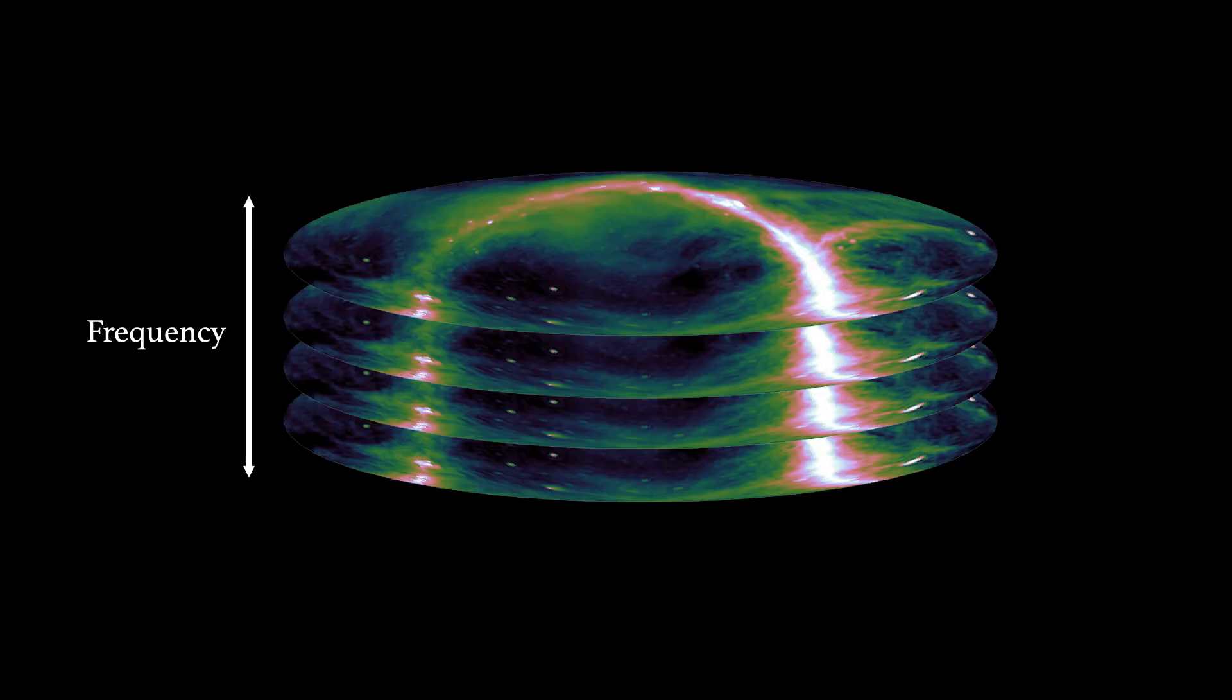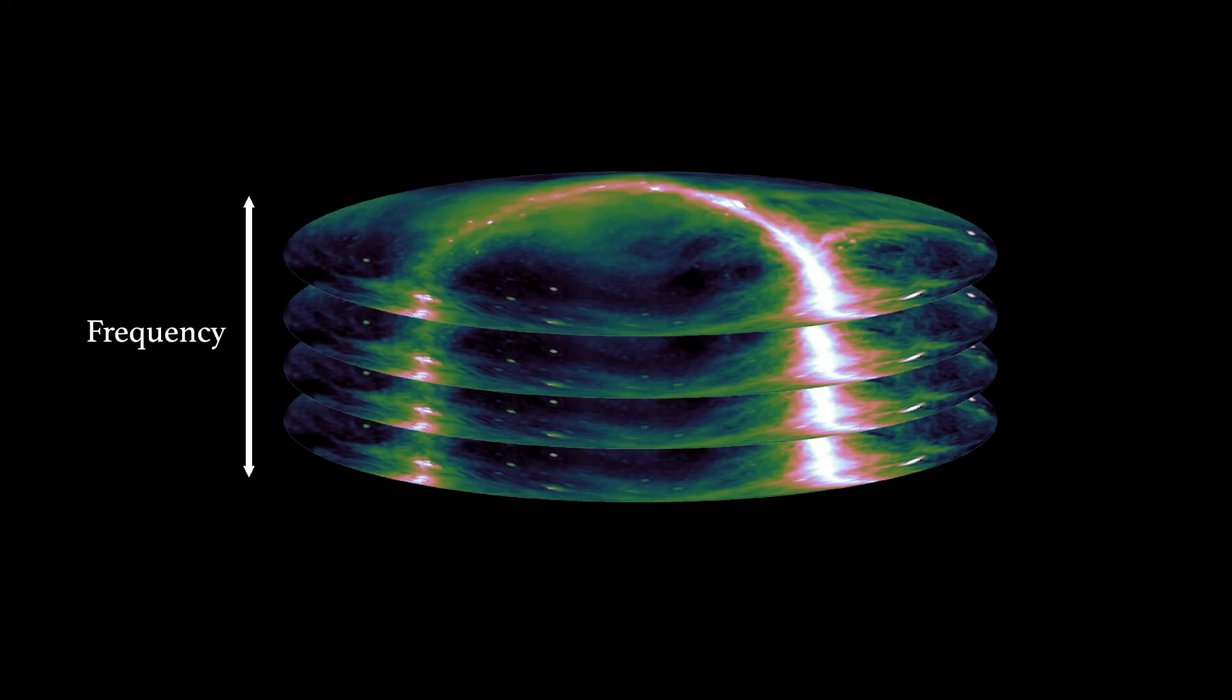One way to combat this is through the generation of multiple sky maps spanning a wide range of frequencies and angular scales. These maps can then be used to generate the foreground model to subtract from the 21cm background signal. However, although smaller angular scale point source foregrounds are relatively well defined, low frequency diffused foreground emissions, especially on the southern hemisphere, are not.